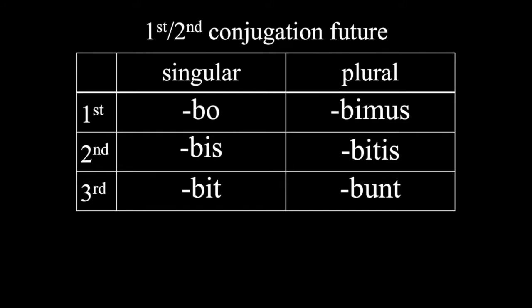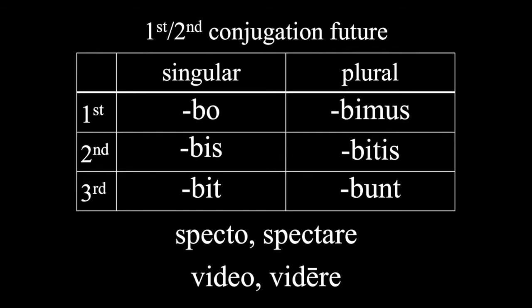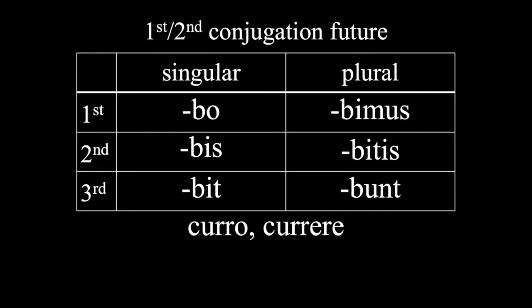The verb endings that you're looking at right now are only added to first and second conjugation verbs like spectare and videre. The ARE and the ERE endings are what indicate that they are first and second conjugation respectively. These future tense endings are never applied to third and fourth conjugation verbs. So if you're dealing with a verb like curere, which is third conjugation, you might be tempted to add these endings to form future tense and come up with something like currebo. Well, don't. That isn't a word, so don't ever use it.